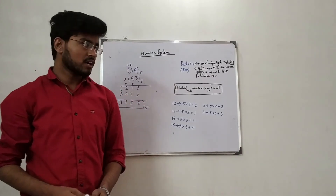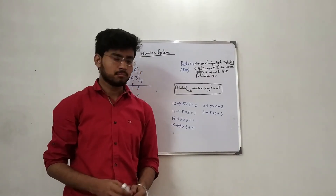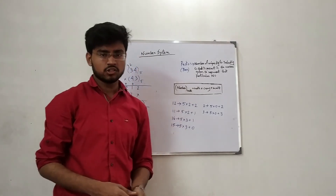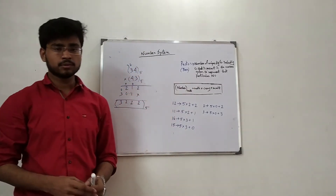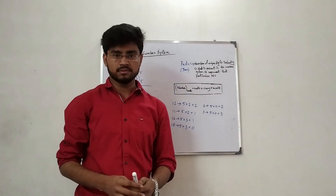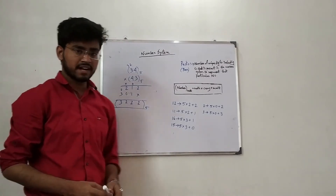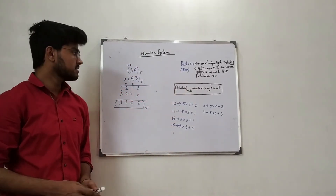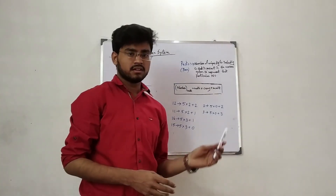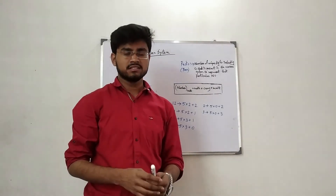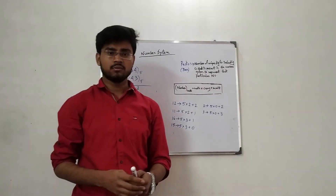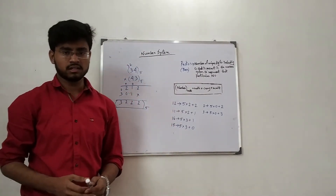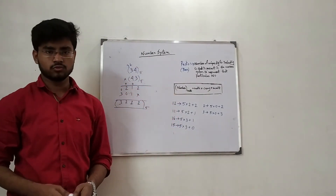So in this way we can perform arithmetic operations — addition, subtraction, multiplication, and division — using this radix method. If you use the normal method it is more difficult, but this method makes it easier for any base. We discussed what is radix and the four types of number system: decimal, binary, octal, and hexadecimal. From the next lecture I will discuss the four types of number system in detail, including conversions — binary to decimal, decimal to binary, binary to octal, binary to hexadecimal, and so on. Thank you for watching.